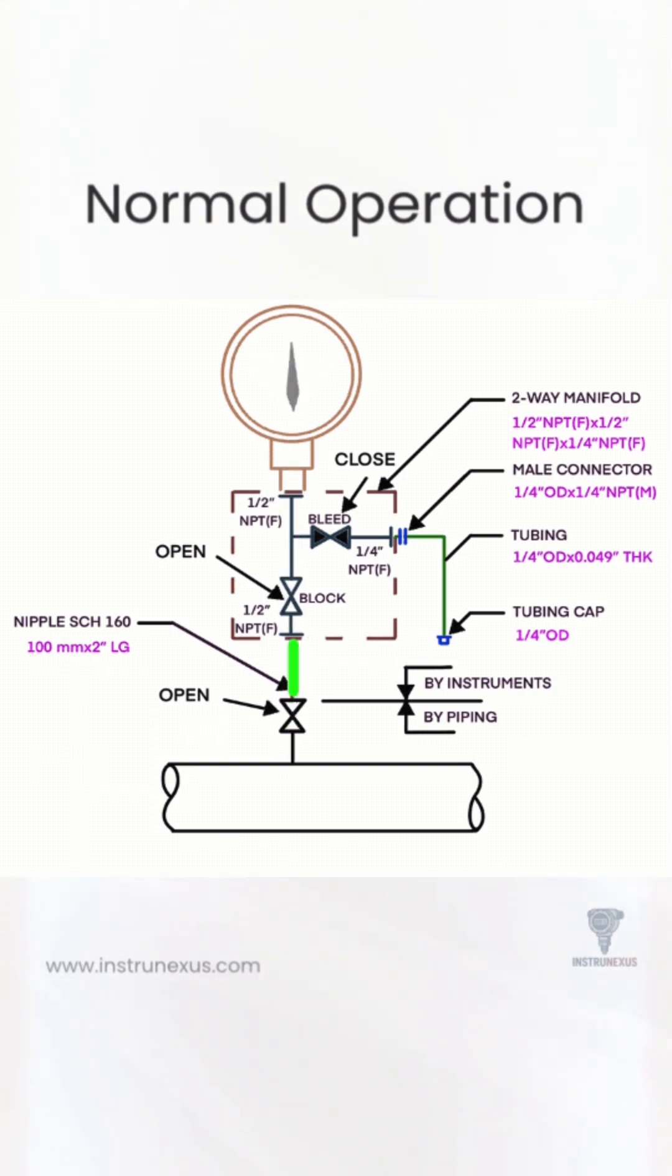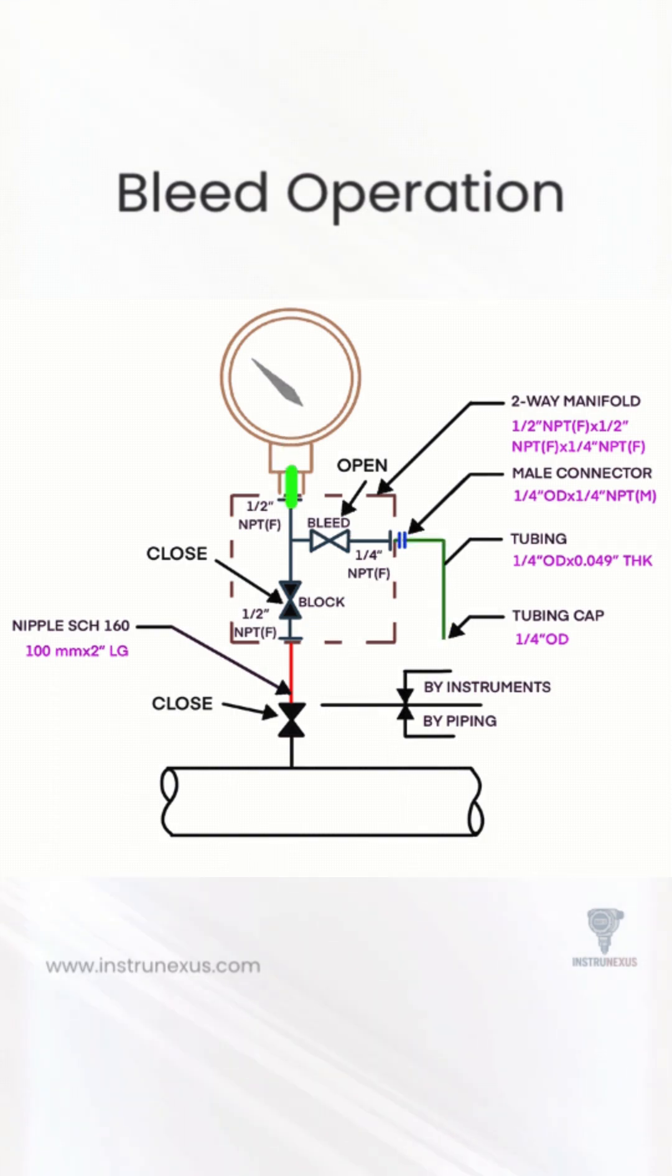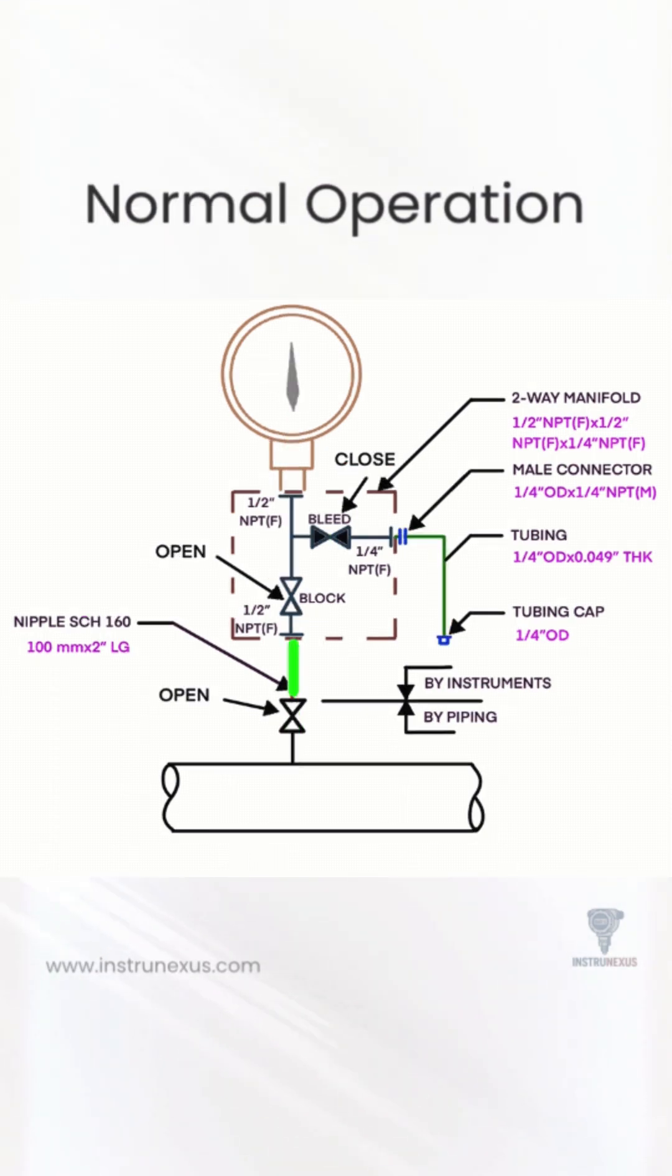The pressure gauge is mounted on top of the manifold with a half-inch NPT female connection, displaying the actual process pressure. For venting or calibration, a one-quarter inch tubing line with a male connector and tubing cap is provided.